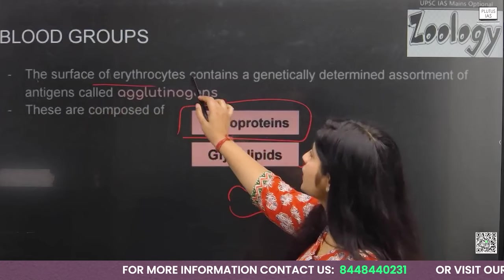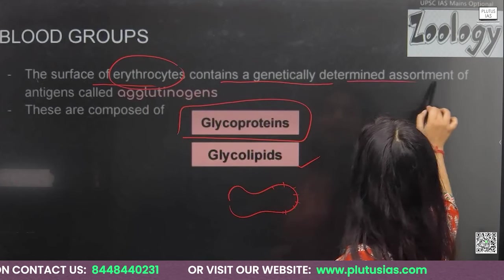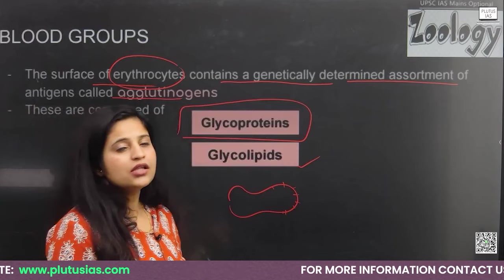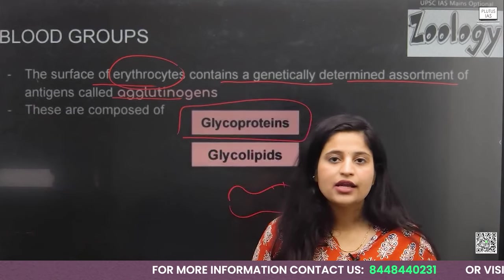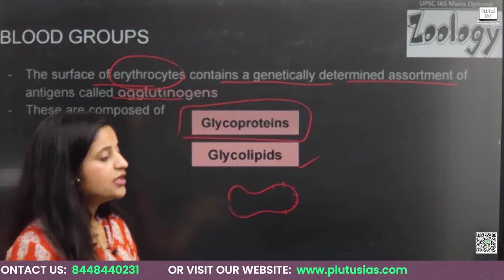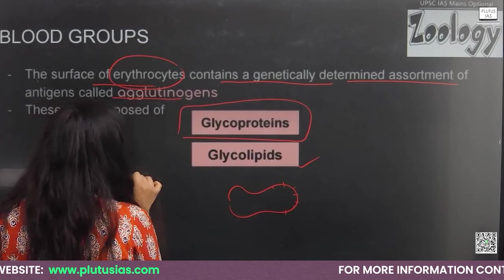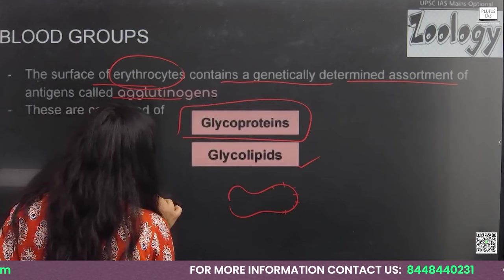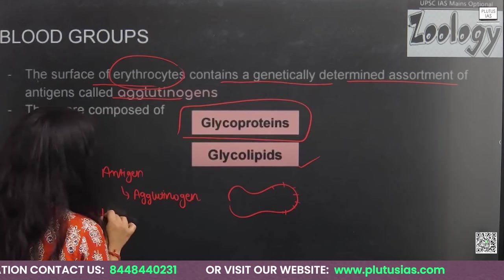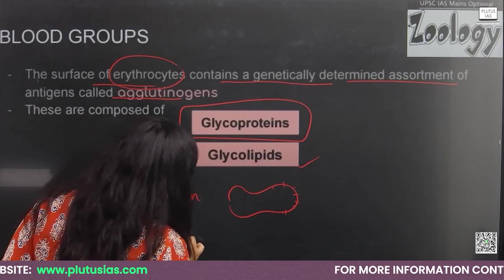The surface of erythrocytes (red blood cells) contains a genetically determined assortment of antigens, also known as agglutinogens. This is already genetically determined — by birth, our blood group is determined and is controlled by our genes. Antigens are also known as agglutinogens, and antibodies are also known as agglutinins.